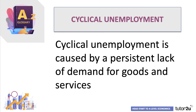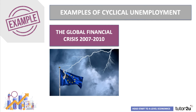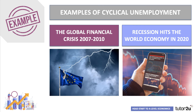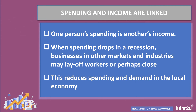Cyclical unemployment is caused by a persistent lack of demand for goods and services. It's also known as demand-deficient or Keynesian unemployment. Cyclical unemployment is going to be the main focus at the moment as we experience a recession. The last severe rise in cyclical unemployment was in the aftermath of the global financial crisis, which essentially started in 2007. The crucial concept here is that spending and income are linked — one person's spending in the shops is another person's income.